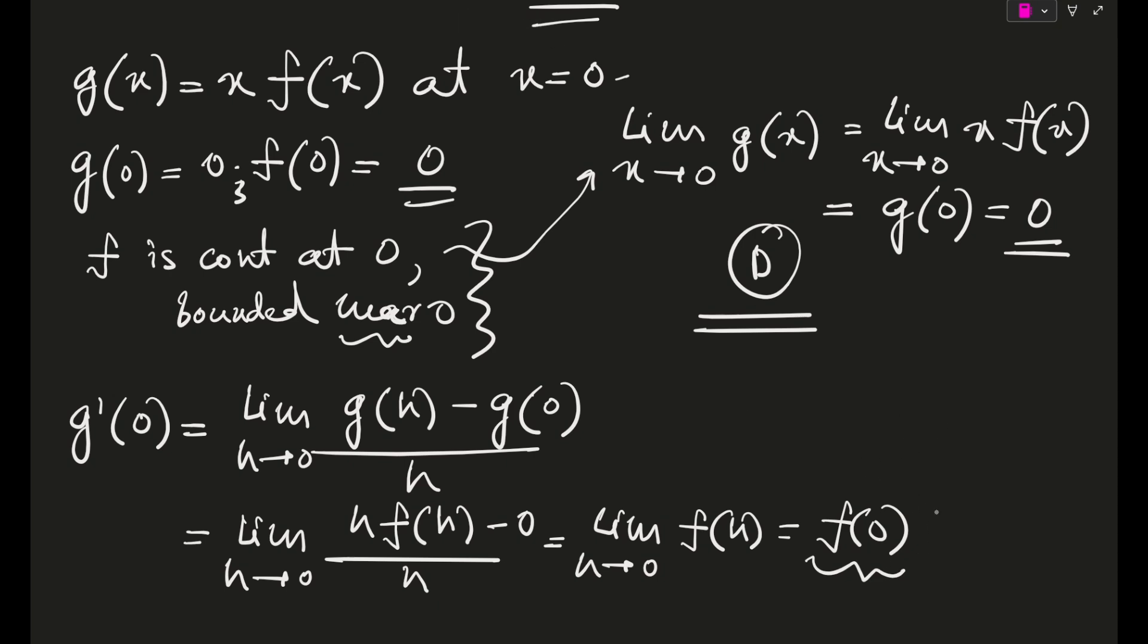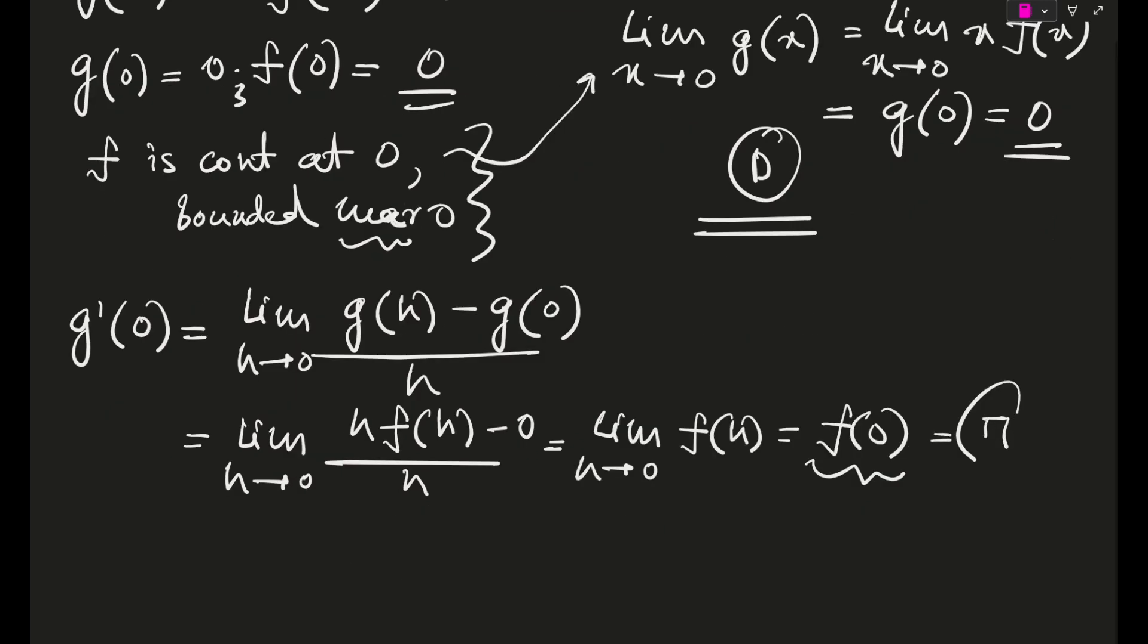So this actually comes out to be f of 0. So your f of 0, if we look at the definition of the function, this thing is equal to pi. So if g dash 0 is well defined, it is a finite value, it is not undefined or infinite. So really easily I guess our answer will be A, B, C, and D—all the options, right?